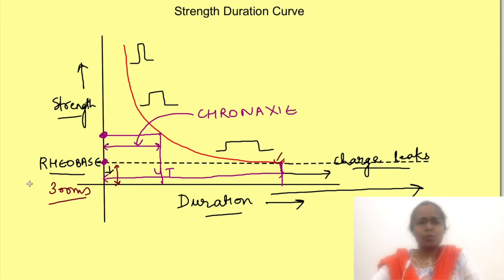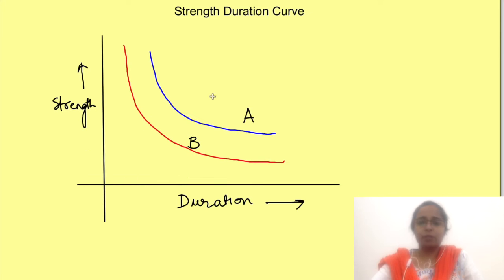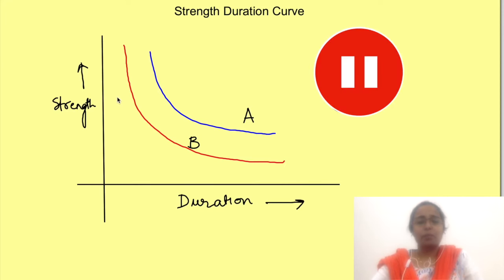So why do we want to know all this? You will understand it better if I show you graphs of two different nerves. By seeing this graph can you tell which represents a more excitable nerve, A or B? You can pause the video and think about the answer before moving on.